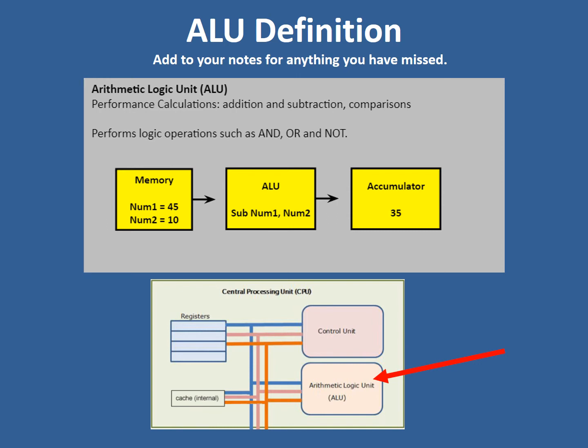Here you can see an example. We've got two numbers, 45 and 10. The ALU subtracts number two from number one, giving us 35. Look how it's using the accumulator to store that value.